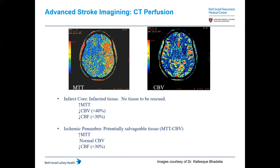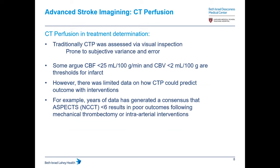Traditionally, you would assess CTP by visual inspection. The infarct core — no tissue to be rescued — is usually a decreased region of CBF, typically less than 40%. The ischemic penumbra, the salvageable tissue, is the mismatch between CBV and MTT, which is increased. For ischemic core, you have increased MTT matched by decreased CBV. For the penumbra, you have increased MTT that is mismatched with normal to even increased CBV — that is the potentially salvageable area. However, visual inspection is subjective and prone to error.